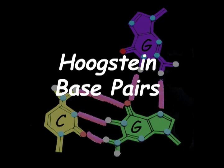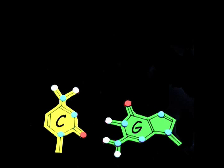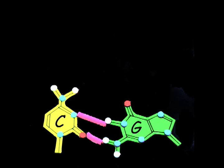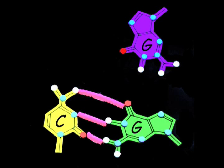A triple base pair is built in two steps starting with a standard Watson-Crick base pair, such as GC. The third base, such as guanine, comes in parallel to the other bases and forms hydrogen bonds to the available base of the GC base pair. This is called a Hoogsteen base pair.